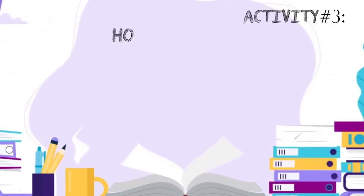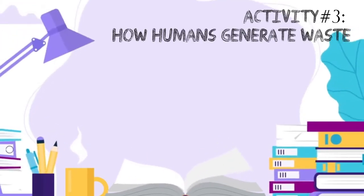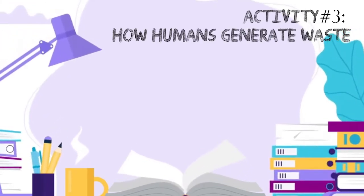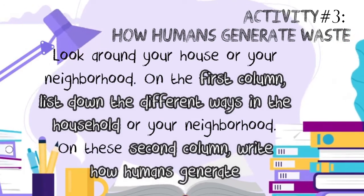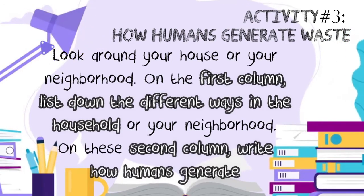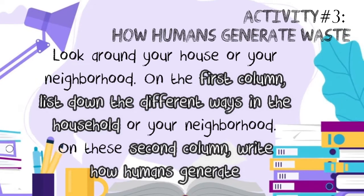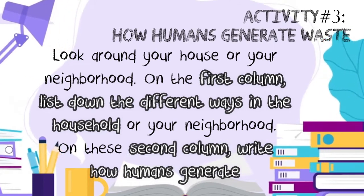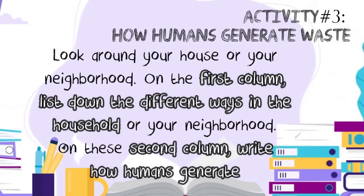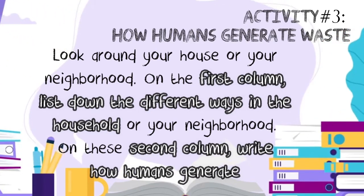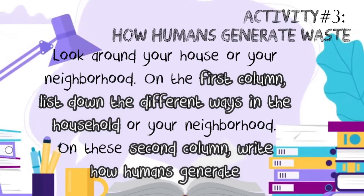For your third written work, Activity 3 — 'How Humans Generate Waste' — look around your house or your neighborhood. On the first column, list down the different waste found in the household or your neighborhood. On the second column, write how humans generate this waste.